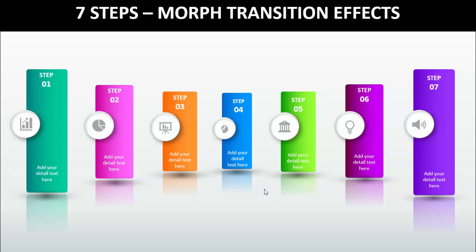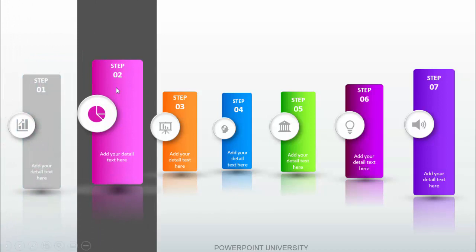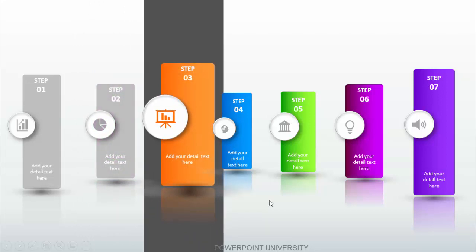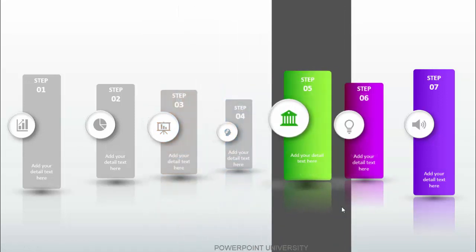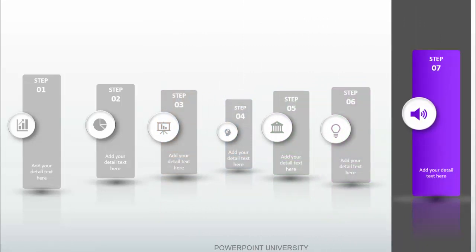Let me show you how the slide works. When I click, the focus comes to the first option and the size of the first option increases. When I click again, the focus goes to the second option, the size of option two increases, and here step one I have put the color as gray. Then the focus moves to step three and you can see it has changed to gray — grayed out.